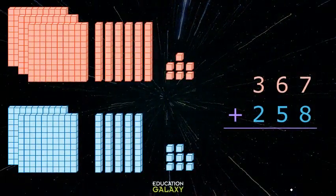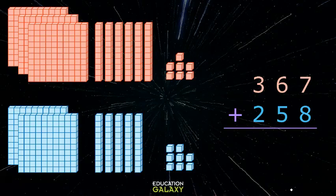Okay, let's start with a sample with some models. So we have 367 plus 258. We start in the ones place, where we have 7 ones and 8 ones, which together makes 15 ones.